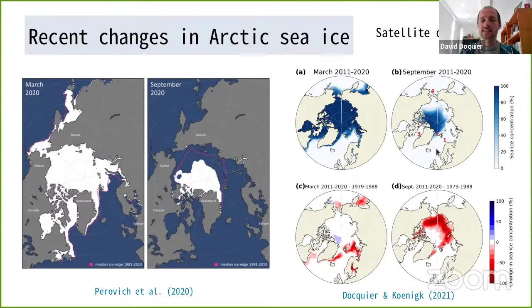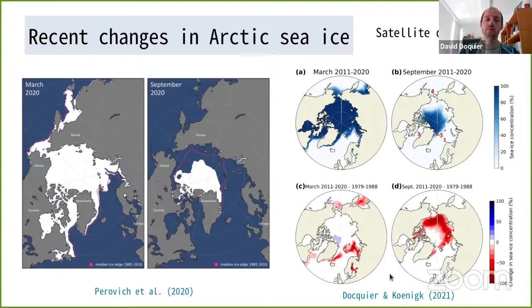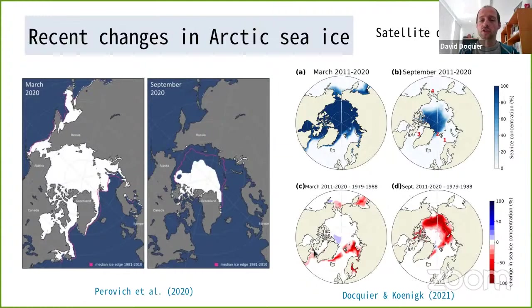Over time you see a reduction, especially in summer September, where you can see the difference between the ice cover in white and the median ice edge over the period 1981–2010. In March, it's less pronounced, but you also see some reductions, especially in the Barents Sea. On the right side, you see March and September sea ice concentration averaged over the last decade, and at the bottom, the change between those recent values and the first decade of satellite observations, which began in 1979.